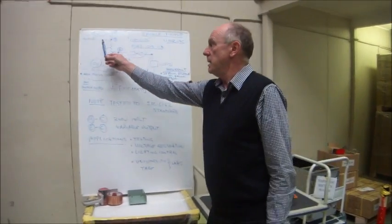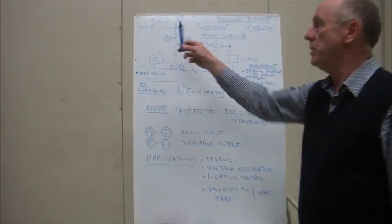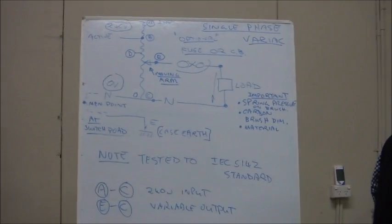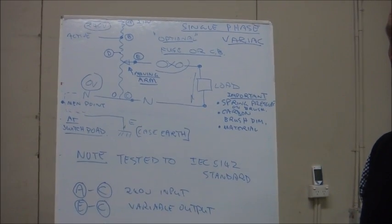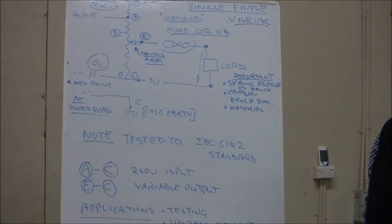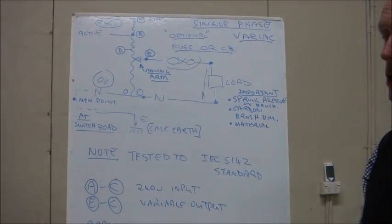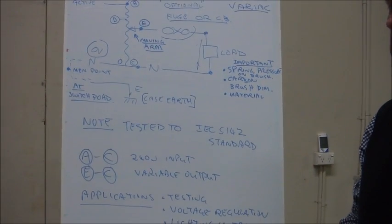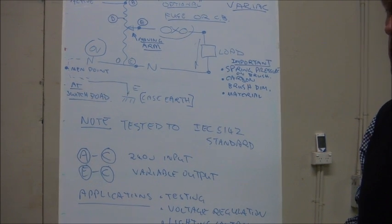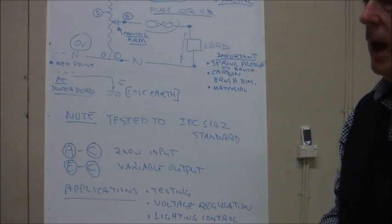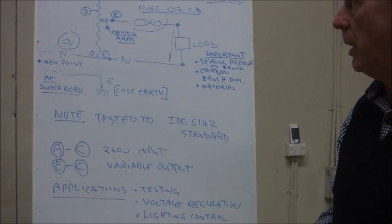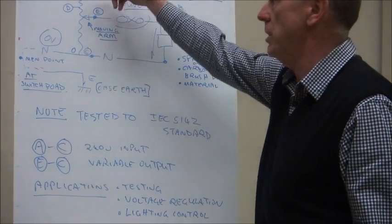The variac doesn't have isolation input to output, so you have to be very careful with it because there's no protection input to output. In other words, if you touch that terminal there and it's at high voltage, you can get electric shock. So it's only to be used by people that are technicians or electricians or people that understand what an auto transformer is, because this is just an auto transformer.